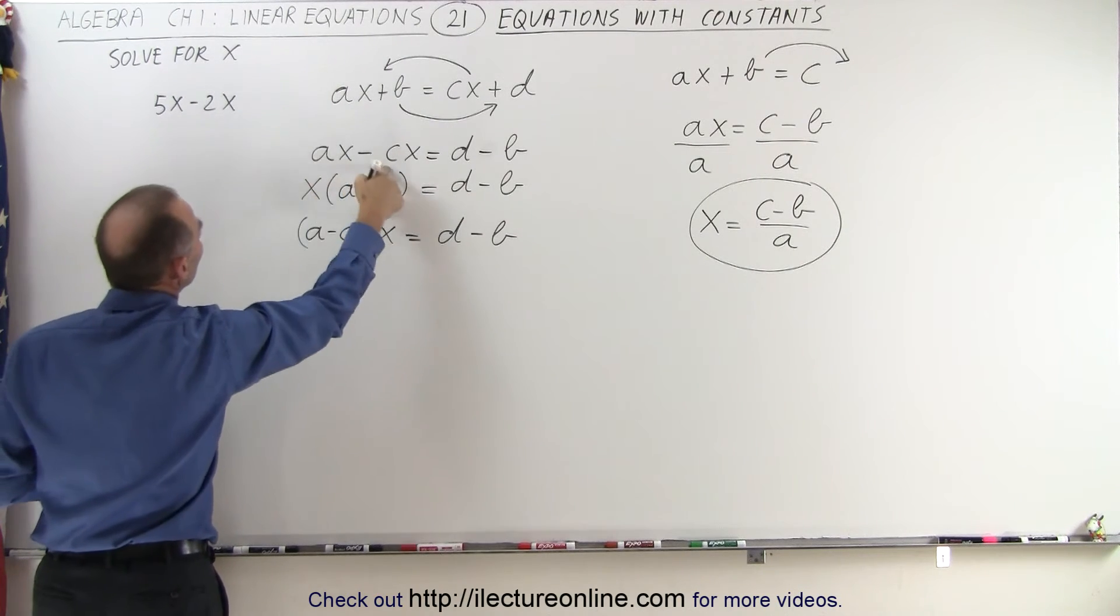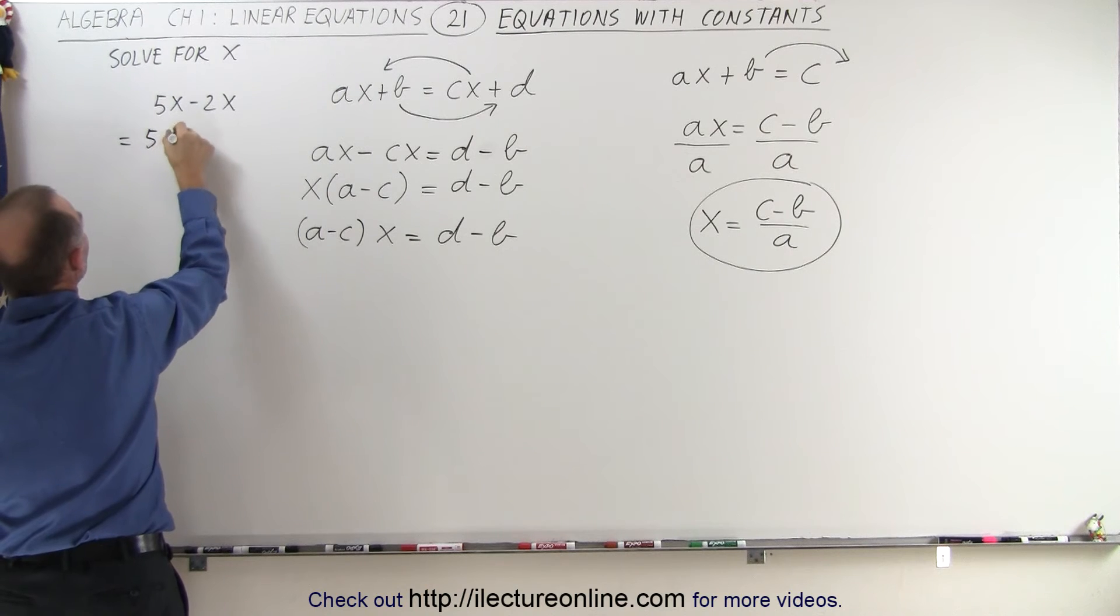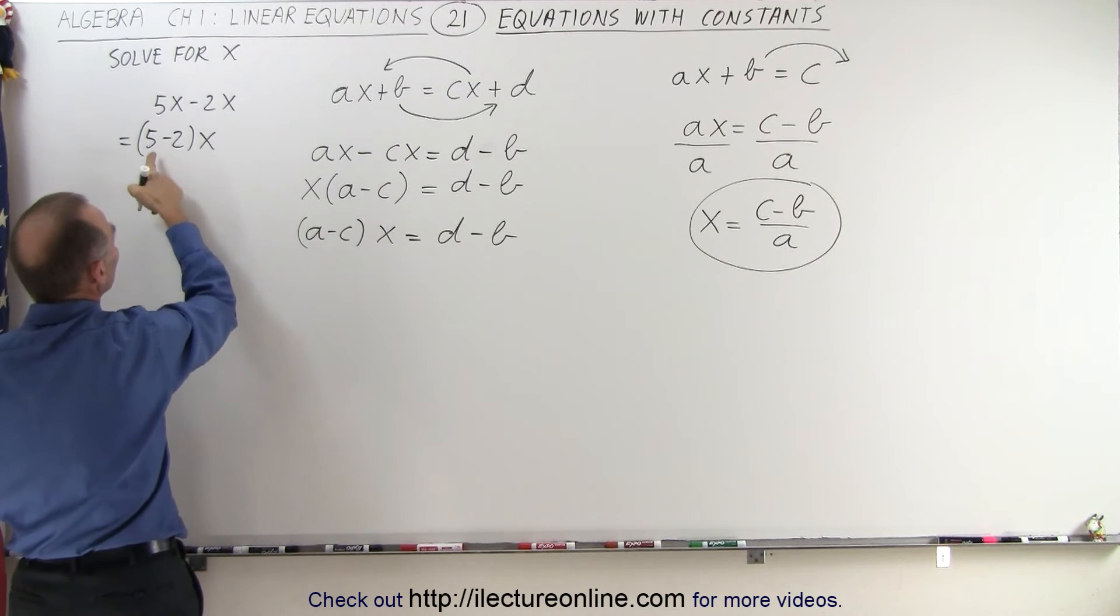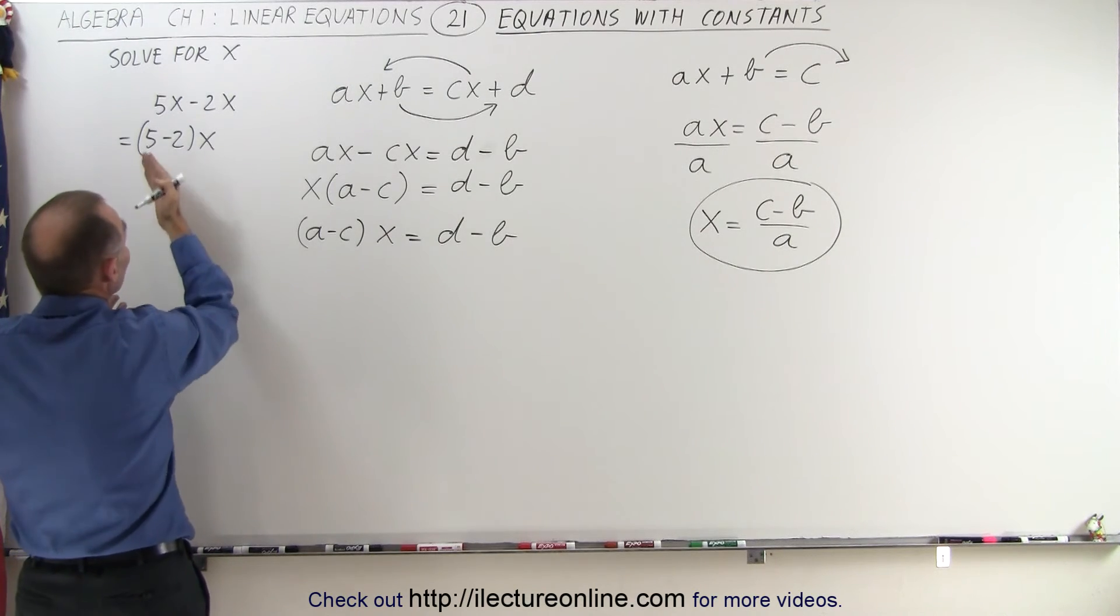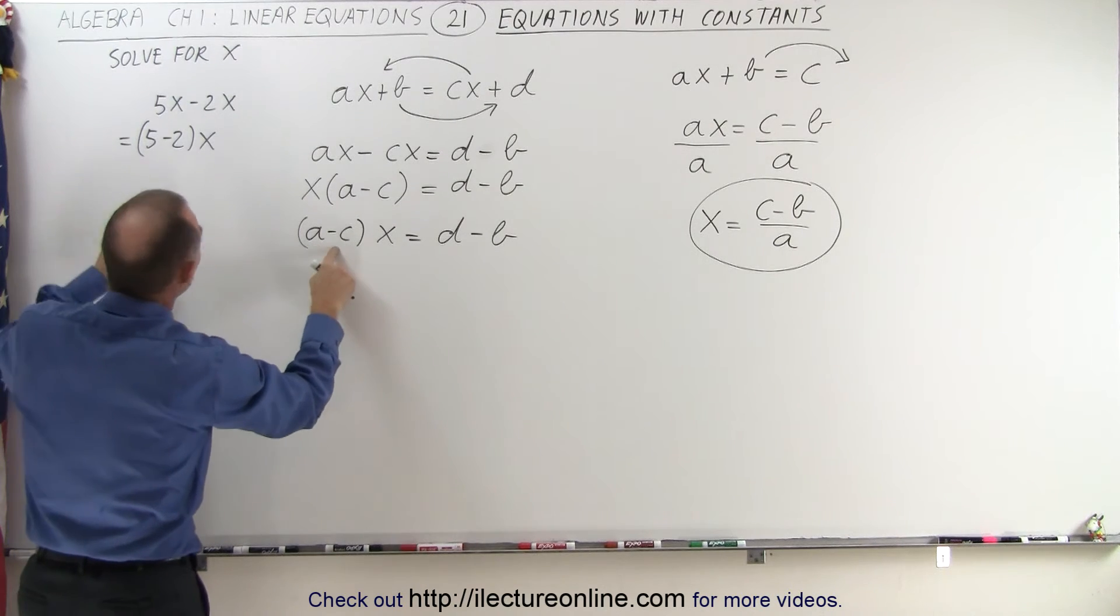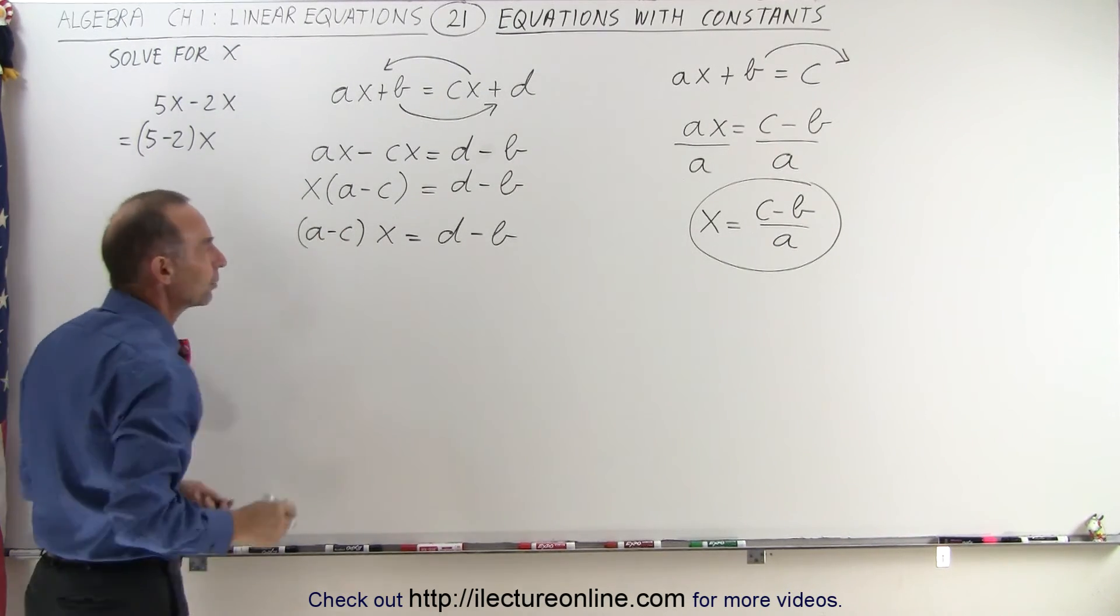So A would be 5 and C would be 2. So this can then be written as 5 minus 2 times the quantity X which then of course would be written as 3X. But since we don't know what the A and the C are, they could be whatever number, we'll write it in this form as A minus C instead of 5 minus 2 being equal to 3.